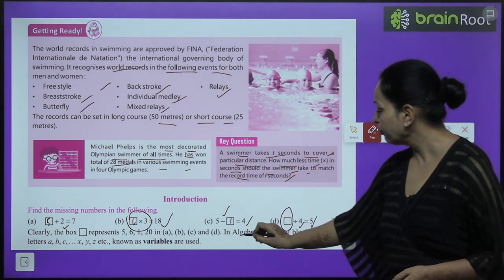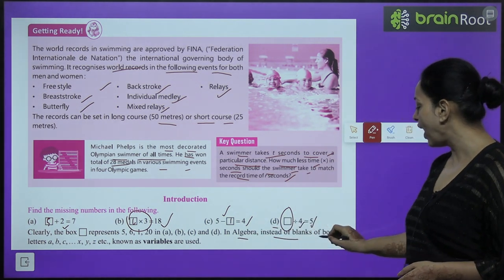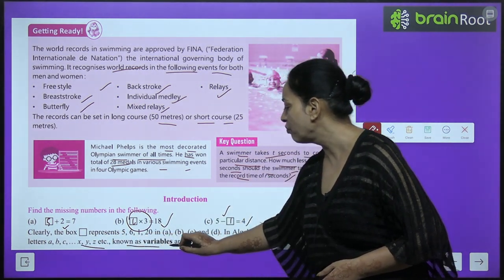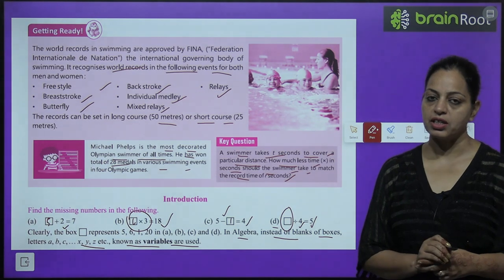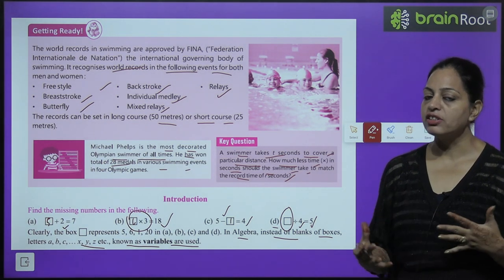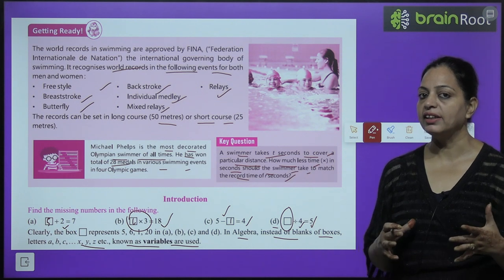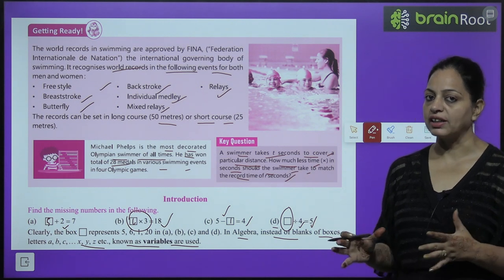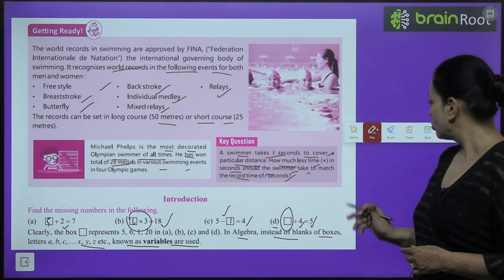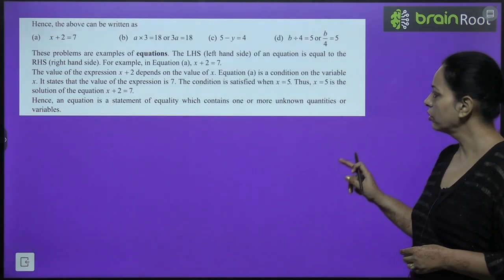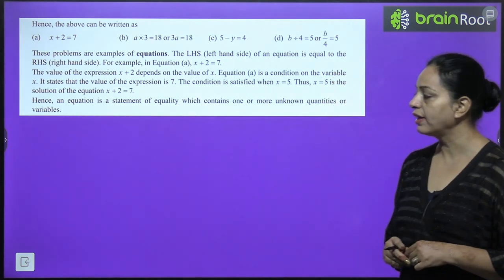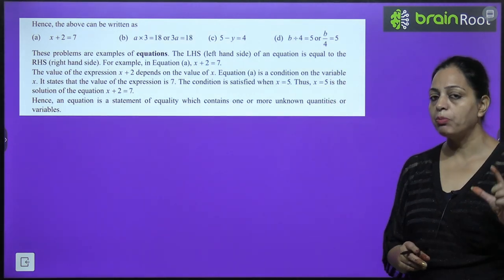In algebra, instead of blanks or boxes, letters A, B, C, X, Y, Z — known as variables — are used. In Maths we use numbers, but algebra is a branch of mathematics where we use letters along with numbers. So the above examples can be written as: A part: x plus 2 equals 7.